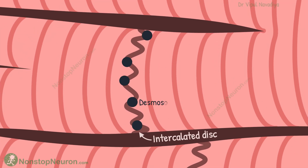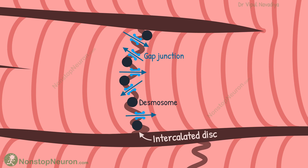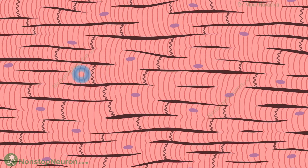At the intercalated discs, desmosomes connect the adjacent cells mechanically, and a high number of gap junctions connect the cells electrically. The gap junctions provide free passage to ions, so the electrical activity passes from one cell to the next very rapidly. Because of this, stimulation of one cell results in a rapid spread of action potential to all other cells.